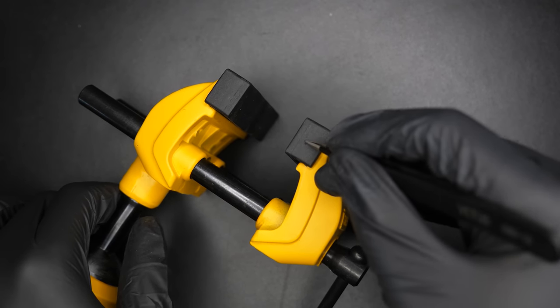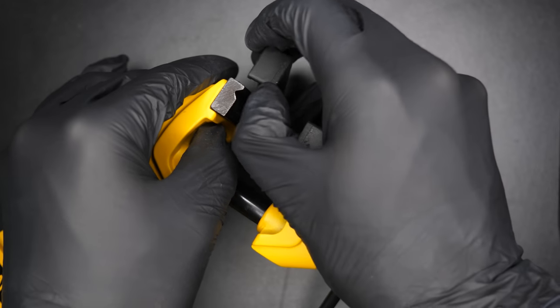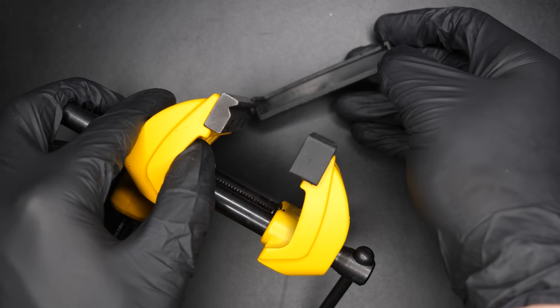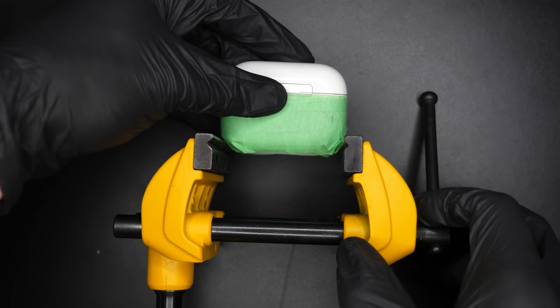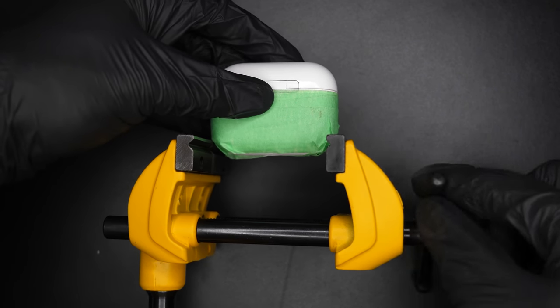Ideally your vise has soft rubber jaws. Mine has nice removable ones. If you don't have soft jaws, you can use metal jaws and protect your case with masking tape.